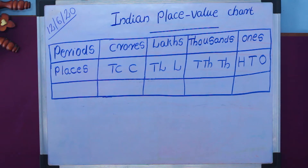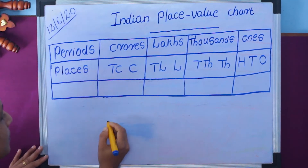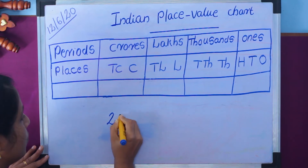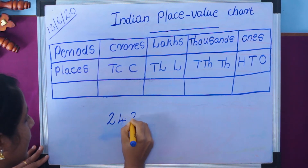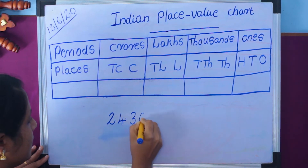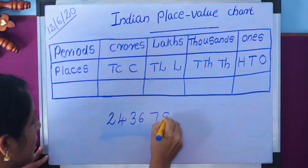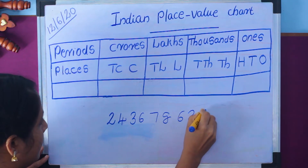Now let us learn how to insert commas, read and write large numbers using the Indian place value chart. Consider the number 2, 4, 3, 6, 7, 8, 6, 3, 9.